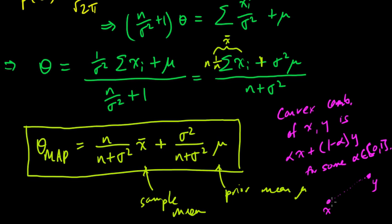As alpha varies, when alpha is 1, then you start out here at x, and as alpha decreases down to 0, you move over to y.